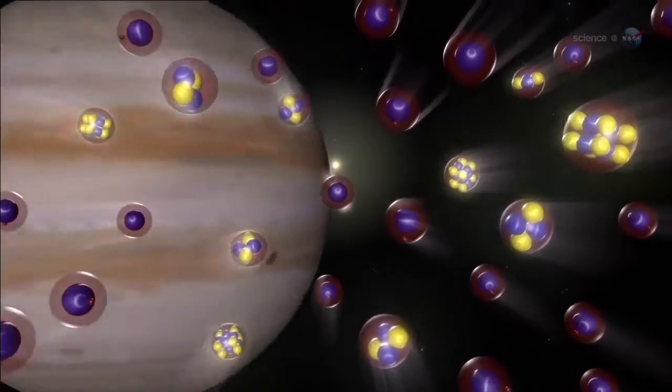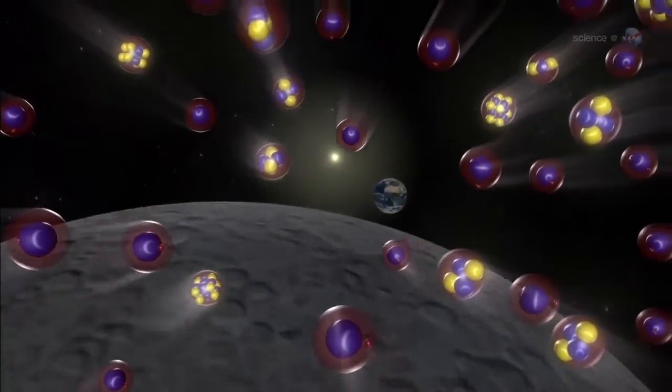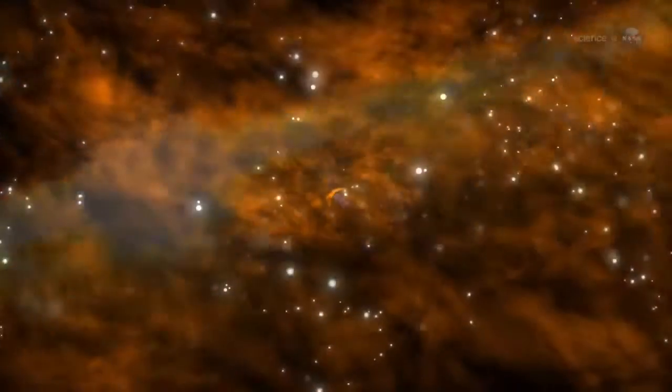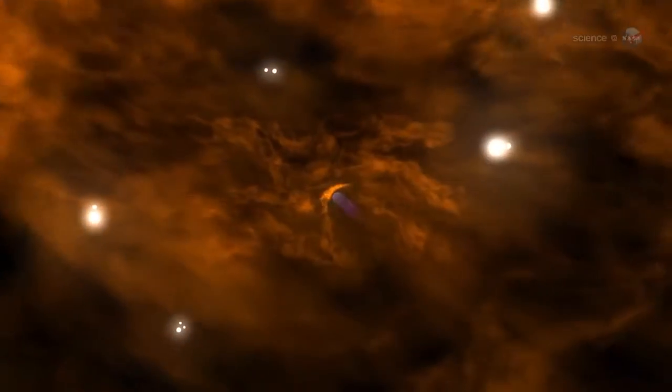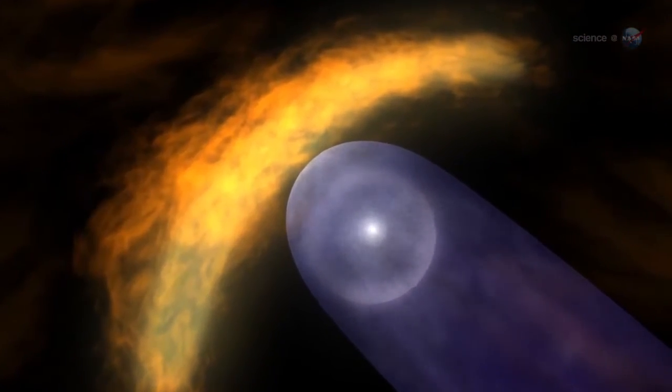It's based on data from NASA's IBEX spacecraft, which is able to sample material flowing into the solar system from interstellar space. We've detected alien matter that came into our solar system from other parts of the galaxy, and chemically speaking, it's not exactly like what we find here at home, says David McComas, the principal investigator for IBEX at the Southwest Research Institute in San Antonio, Texas.